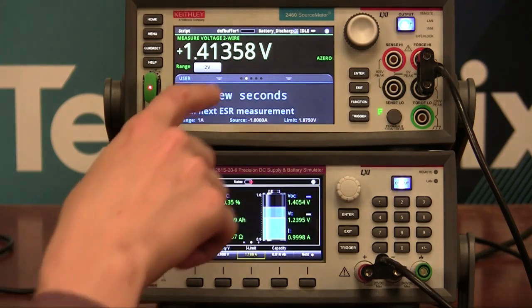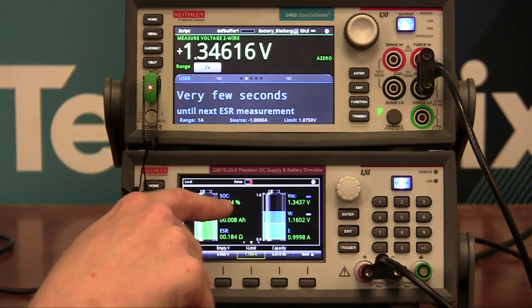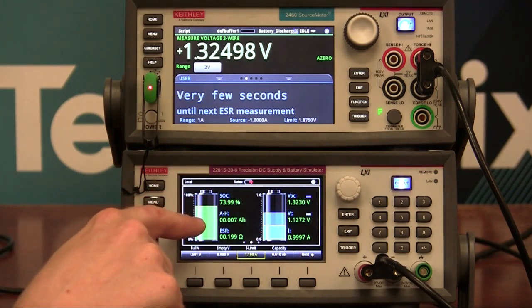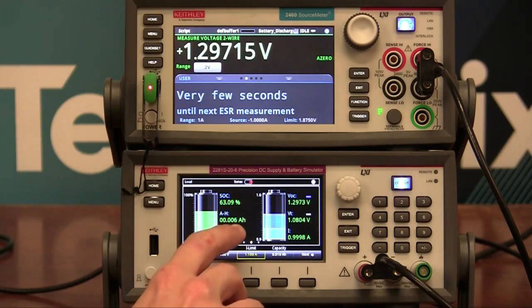So as you can see, this is discharging at an amp. And you can see the state of charge going down. And as it's going down, the amp hour capacity left in the battery is also going down.